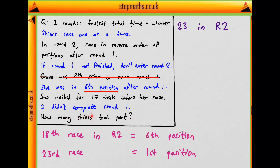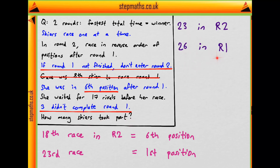We're told that three skiers did not complete round one, and if round one is not finished by a racer, they do not enter round two. This means we have three skiers not included in the 23 from round two. So the number of skiers that took part is the number that entered round one, which is 26 — adding the extra three who didn't finish round one. Our final answer is 26 skiers, which corresponds to A on the question paper.